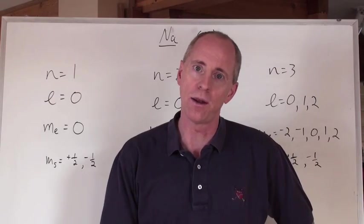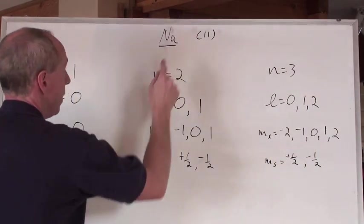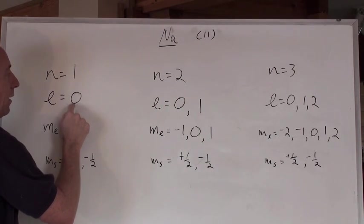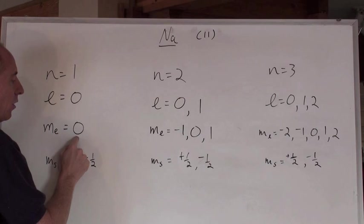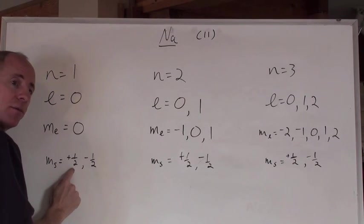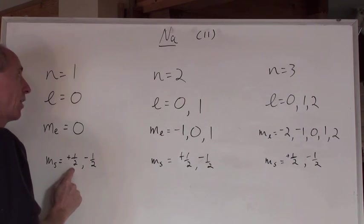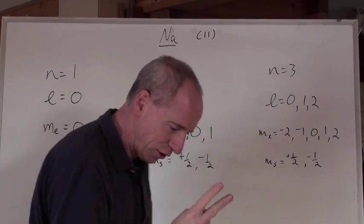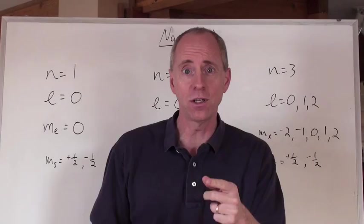In sodium, the first electron is going to be found at n equals 1, l equals 0, ml equals 0, and plus 1 half. And that means that the second electron is 1 0 0 minus 1 half. Those are the first two electrons that are found at n equals 1.